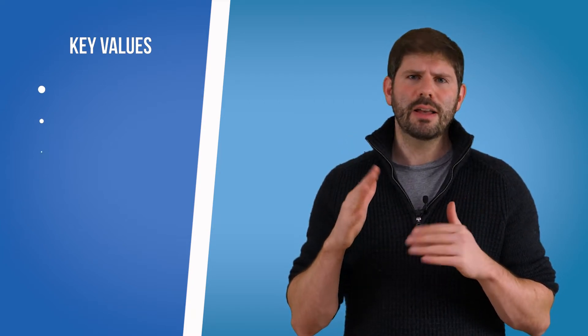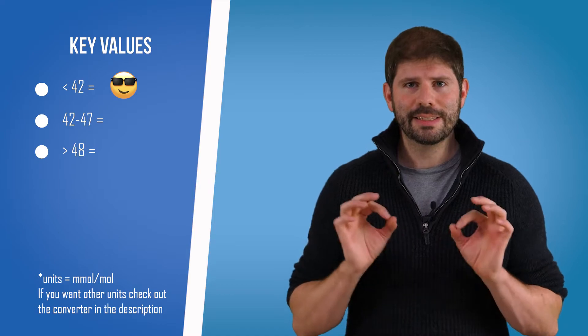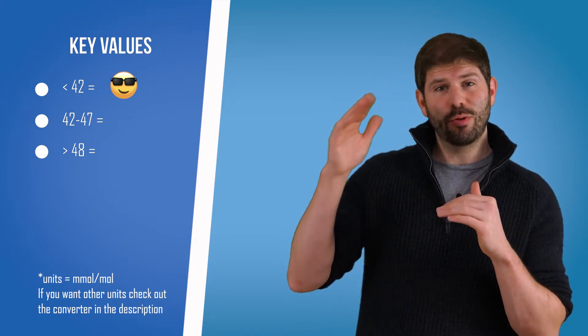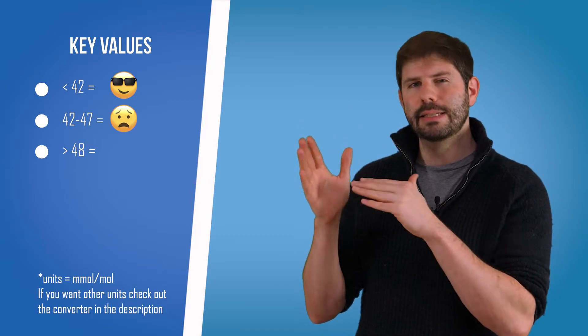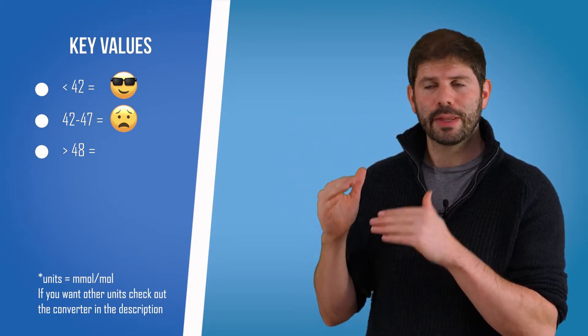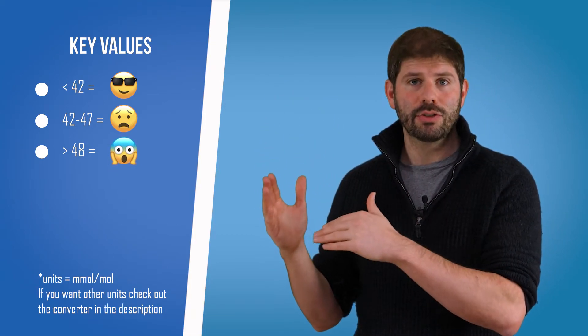So if your levels are less than 42, fantastic, you probably don't have diabetes. If your levels are 42 to 47, that's something we call pre-diabetic—that means you are on the path to diabetes and it's time to do something about it. If your levels are over 48, that is in diabetic territory.